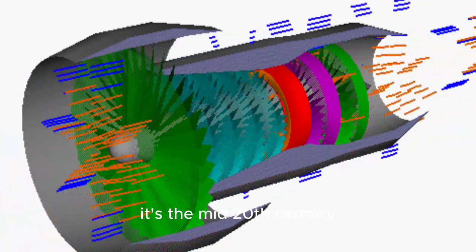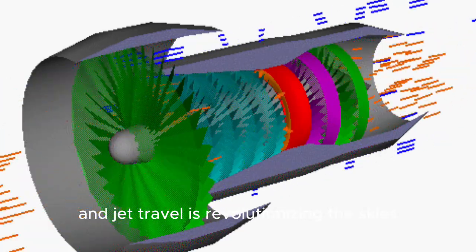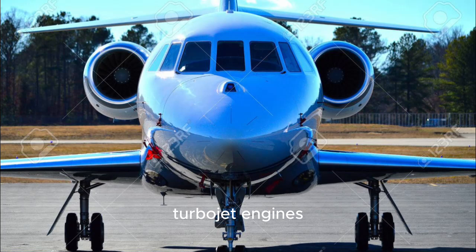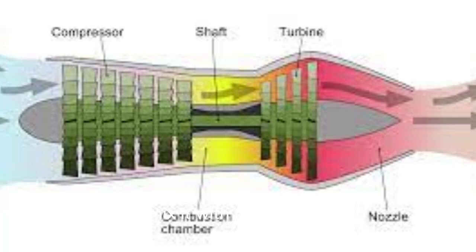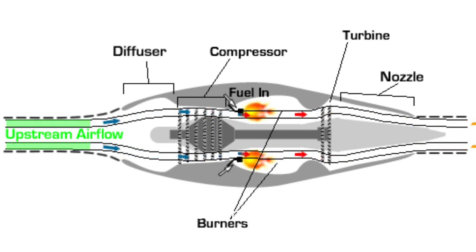The turbojet engine. It's the mid-20th century, and jet travel is revolutionizing the skies. Turbojet engines, with their streamlined design, operate on a straightforward principle. They suck in air, compress it, mix it with fuel, ignite it, and then blast it out at high speed through the exhaust, generating thrust.